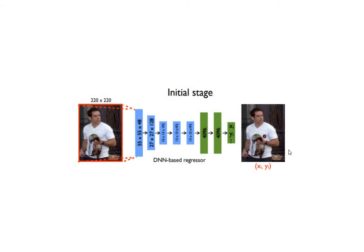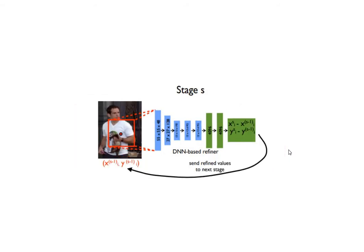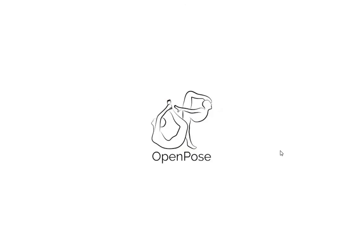There is one more approach called cascade regression. As we go from the first layer to the last layer, we predict the x and y axis for one joint, then take a crop around that point and apply the CNN again. This way we are trying to refine the initial prediction. In the end, we get very accurate predictions. This approach was the first to apply CNN to do human pose estimation.